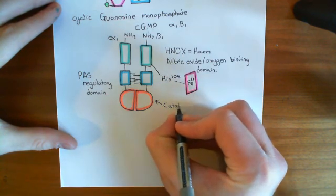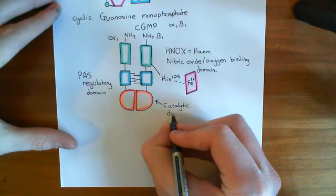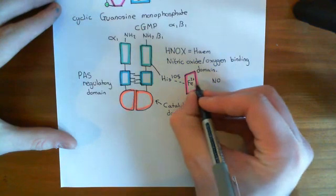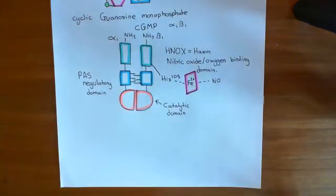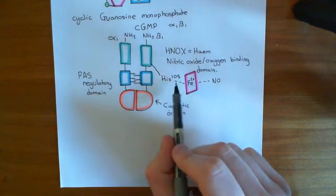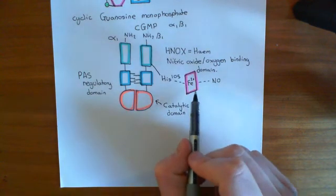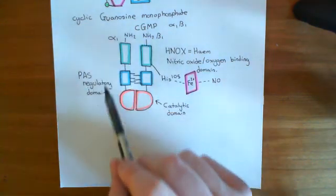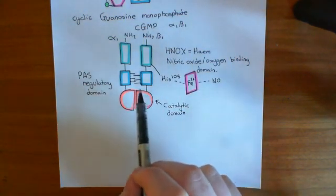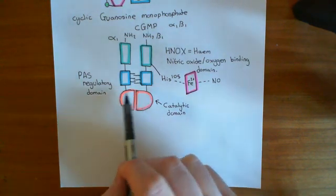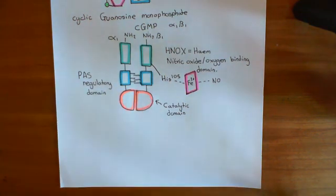We've discussed how we can activate this enzyme using nitric oxide. The nitric oxide molecule comes in and forms a coordinate bond with the ferrous cation. When it does, it cleaves the coordinate bond with the histidine on the other side, and the prosthetic heme group goes off with the nitric oxide. This causes the soluble guanylate cyclase to become active, turning guanosine triphosphate into cyclic guanosine monophosphate and pyrophosphate.